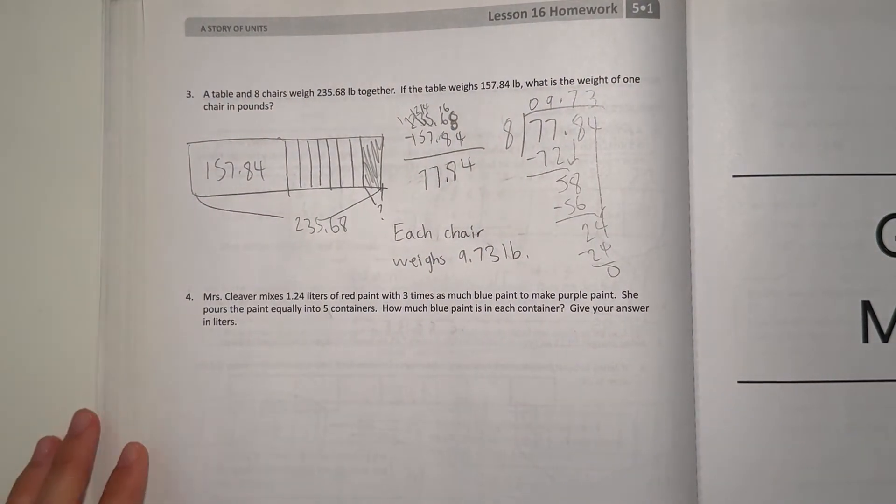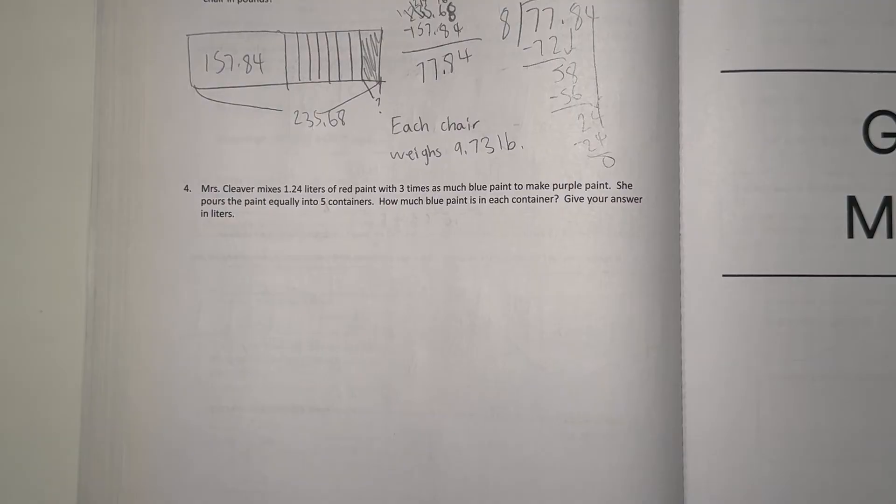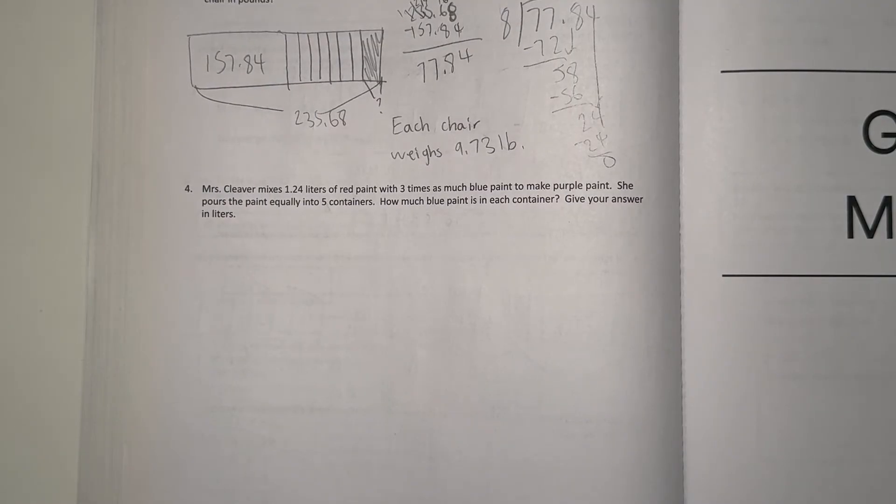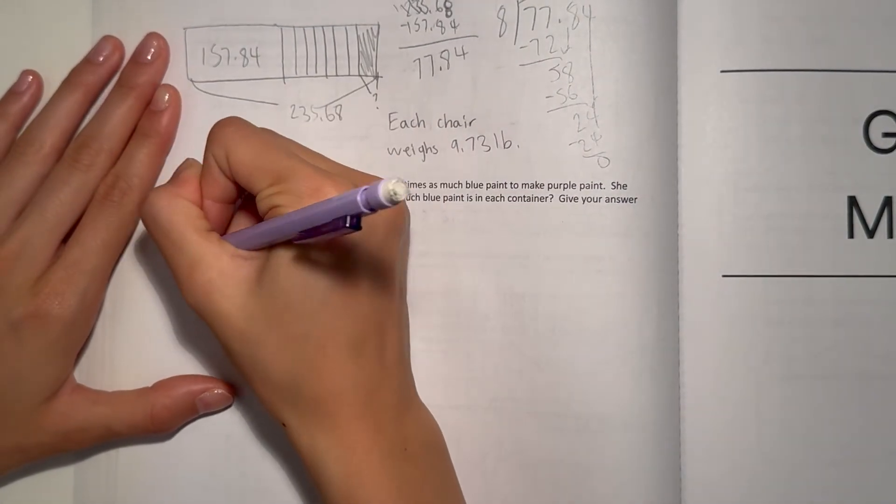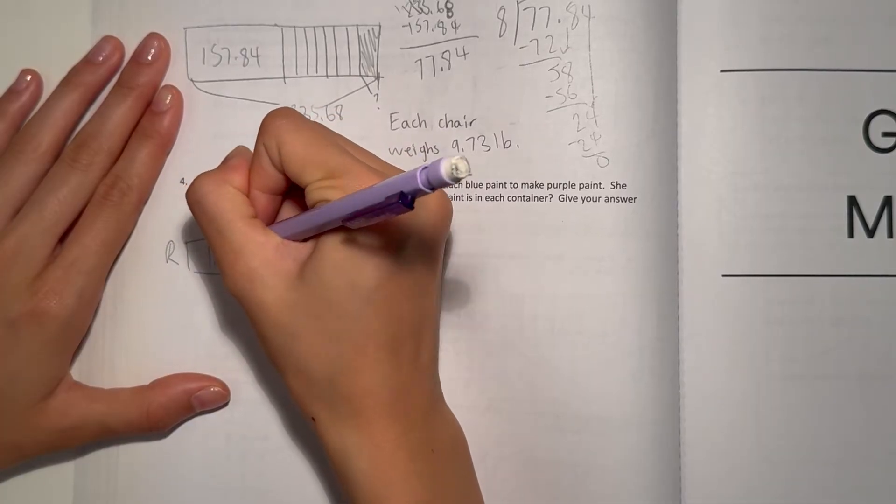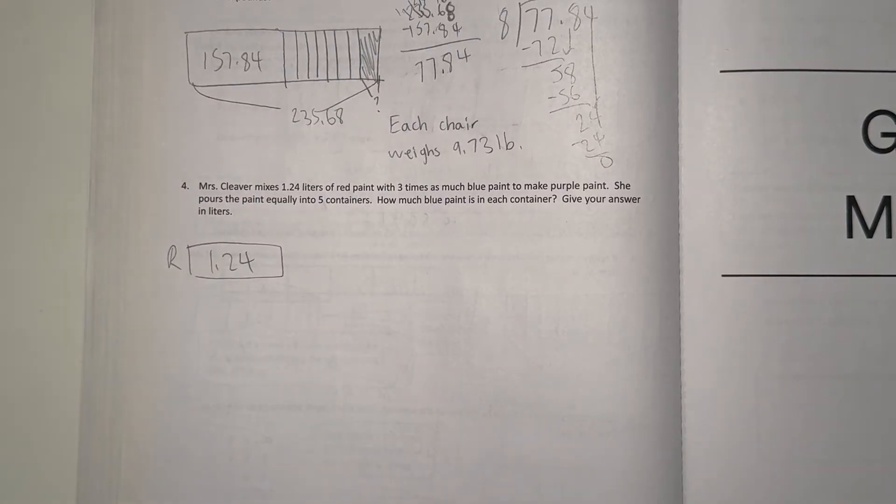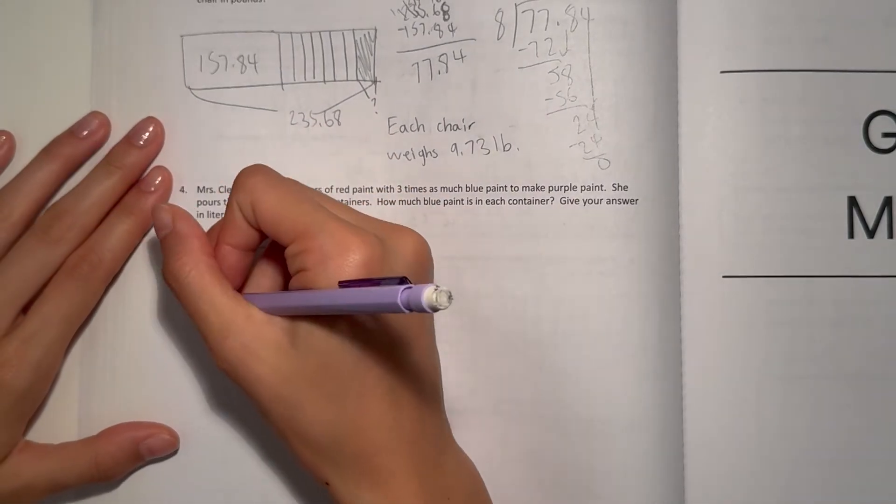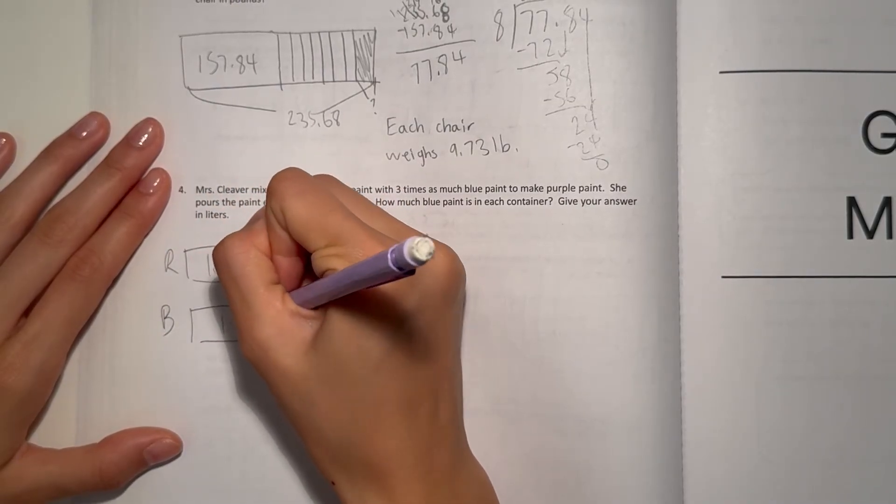Number four: Mrs. Clover mixes 1.24 liters of red paint with 3 times as much blue paint to make her purple paint. She pours the paint equally into 5 containers. How much blue paint is in each container? Give your answer in liters. So 1.24 liters of red, but she does 3 times as much blue paint. So 1.24 but 3 times.